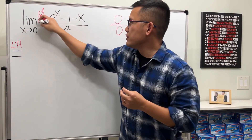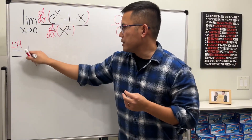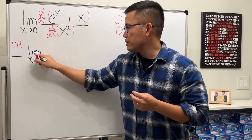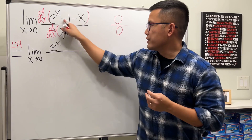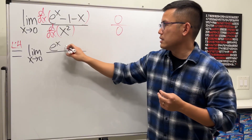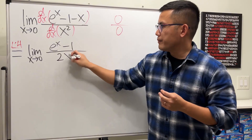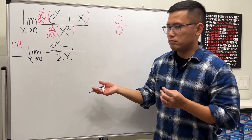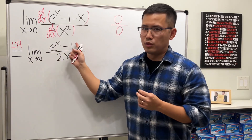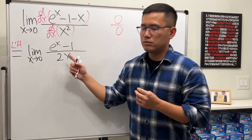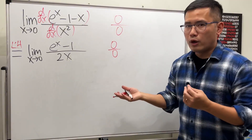Let me write that down. Differentiate the top and differentiate the bottom. This becomes the limit as x approaches zero. The derivative of e^x is just e^x, the derivative of negative one doesn't matter, the derivative of negative x is negative one, and the derivative of x² is 2x. If we put zero in here, e to the zero is one, one minus one is zero; and two times zero is zero. So we have another zero over zero.